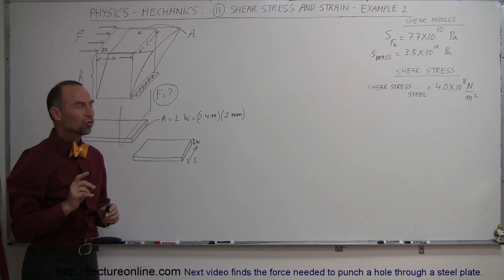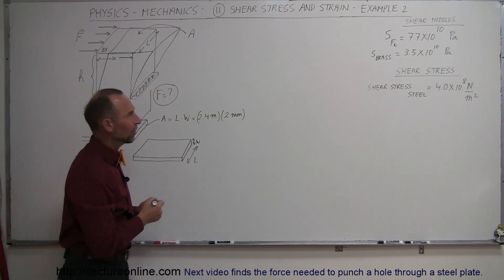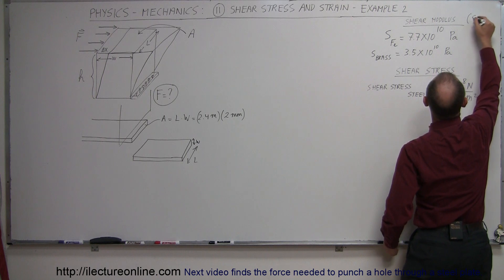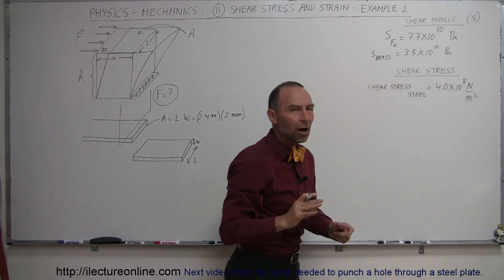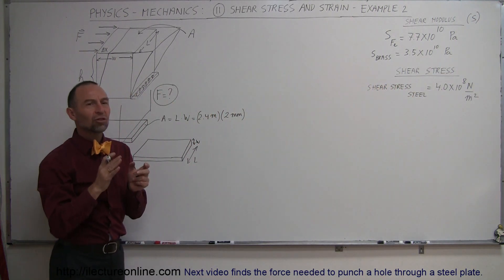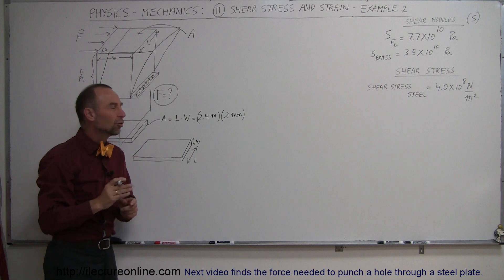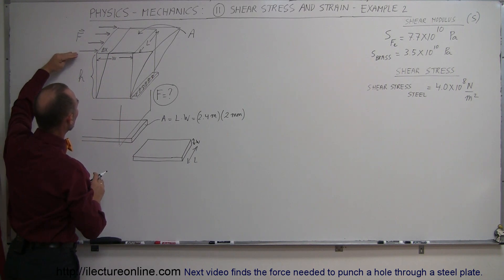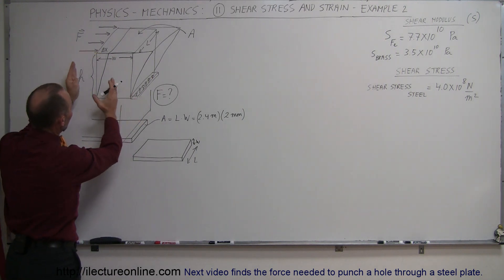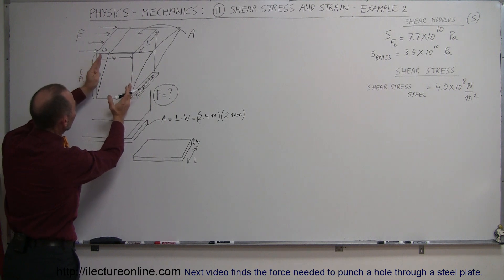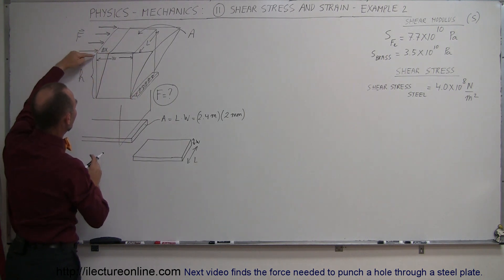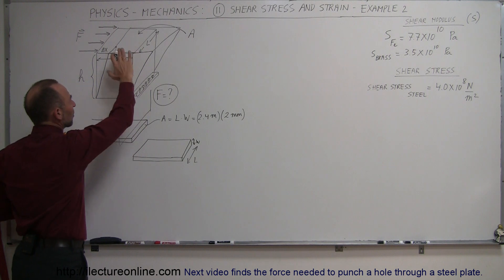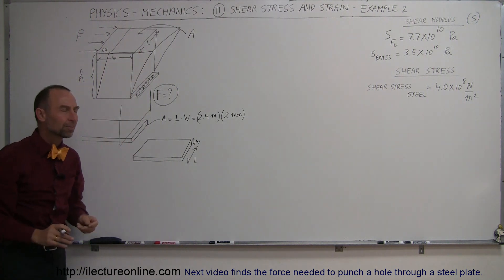Remember, the shear modulus S — we use the letter S to indicate that — is an indication of how much the material resists deformation when it gets pushed in this particular manner. If you push it on one edge and it's held on the other side, the whole thing will deform a certain amount of delta x relative to the height of the material and the cross-sectional area of that piece.